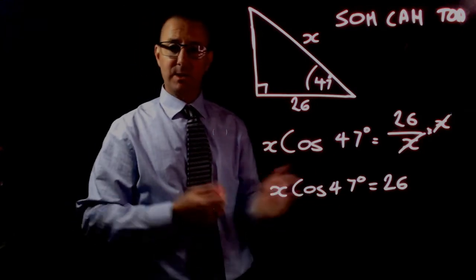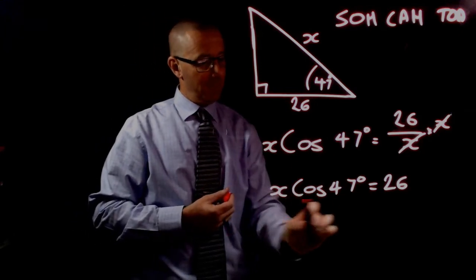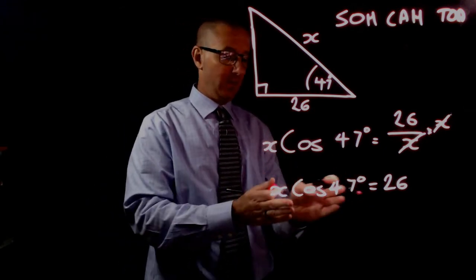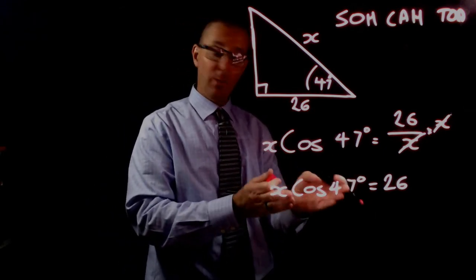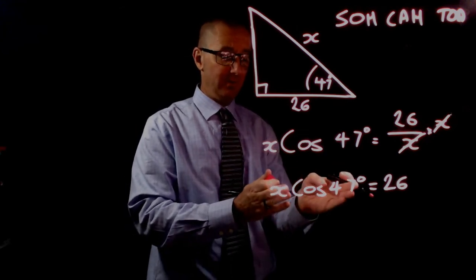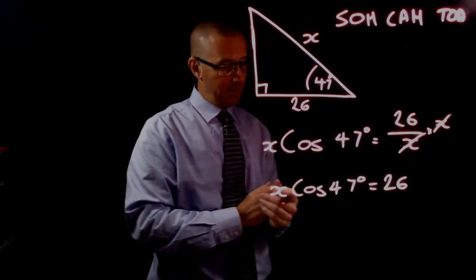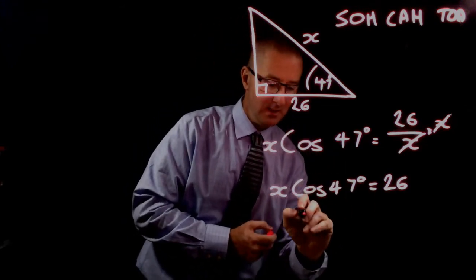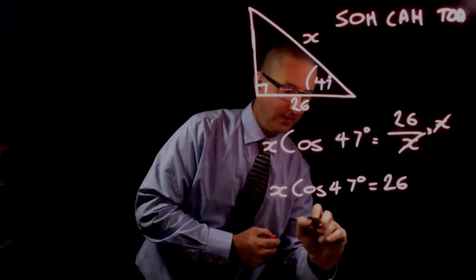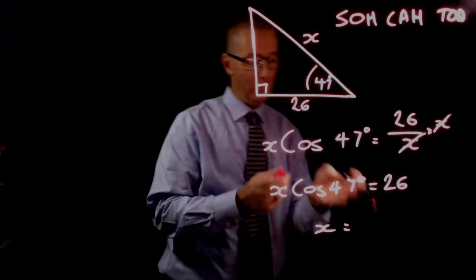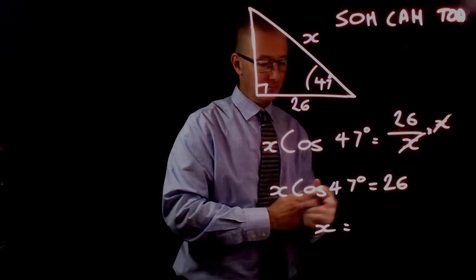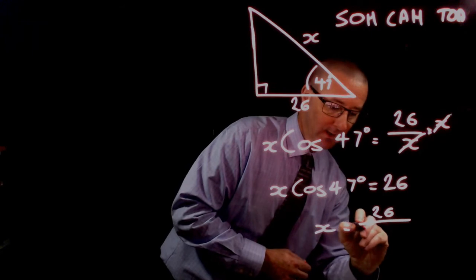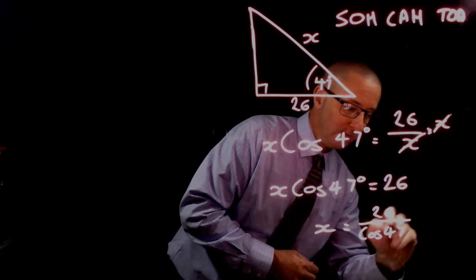Now this is much more solvable. The cos of 47 degrees is a number, and we have x times that number. We divide by cos 47 degrees to move it to the right-hand side, giving us x equals 26 divided by cos 47 degrees.